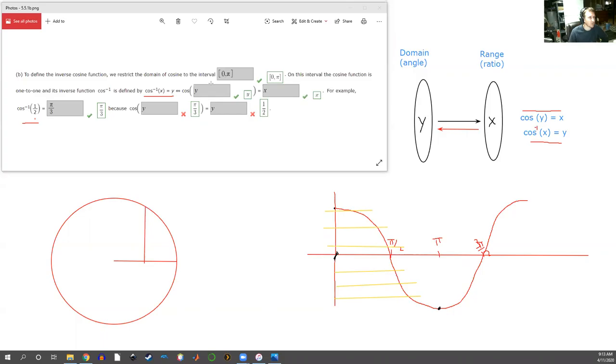So the point that we're talking about on the circle is right up here—could be there, it could also be down here. Both of these have the x-coordinate of one half, but I think in the context of this problem we're only talking about this interval zero to pi.